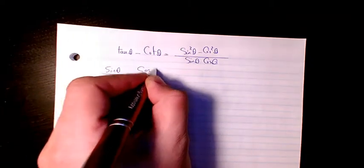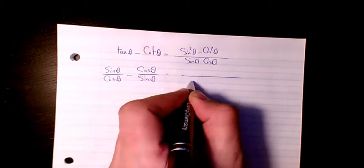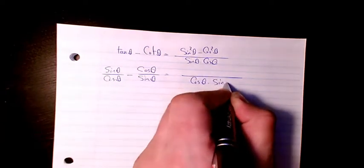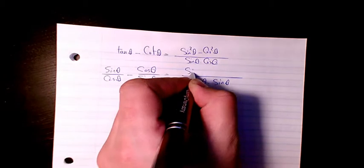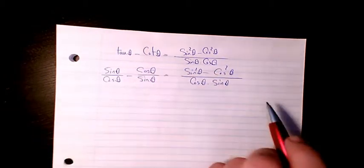Cotin, I convert it to cosine divided by sine theta. What I will do, I do the common denominator. So this one is going to be sine squared theta minus cosine squared theta. So that's proven.